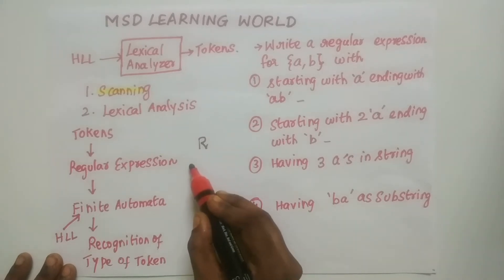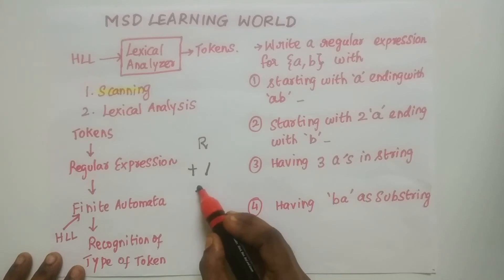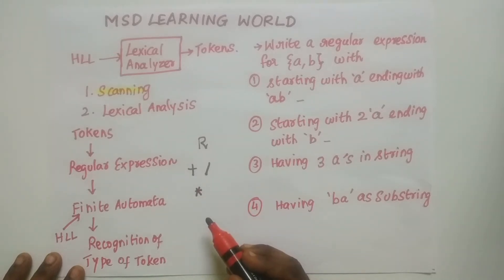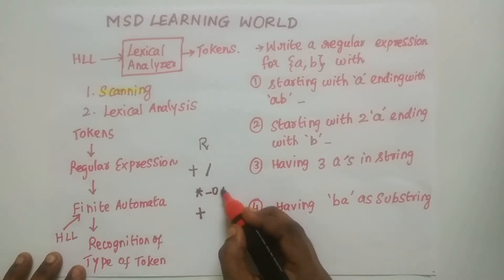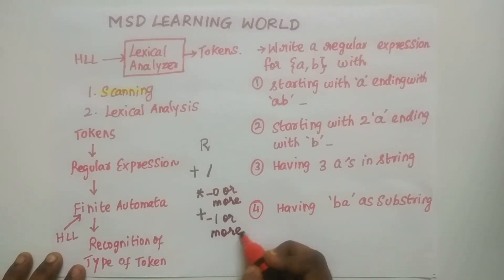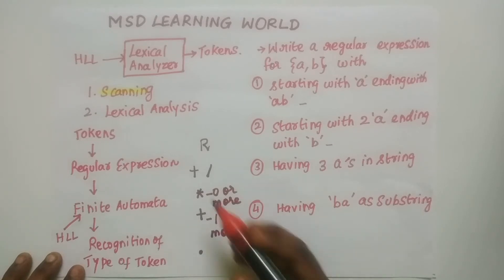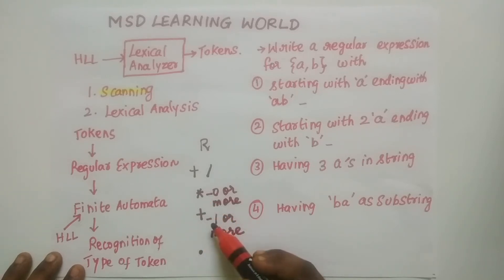A regular expression contains three operators. First is union, represented as plus or slash. Second is closure: star closure represents zero or more occurrences, while plus (positive closure) represents one or more occurrences. Third is the dot, which is the concatenation operator. So the three operators are union, concatenation, and closure — which may be star closure or positive closure.